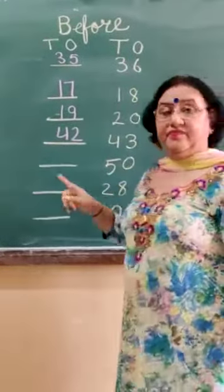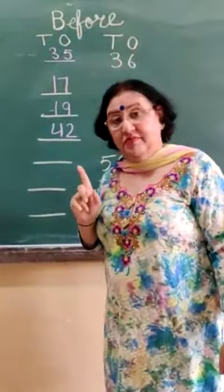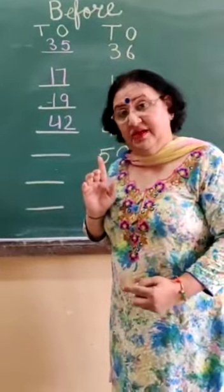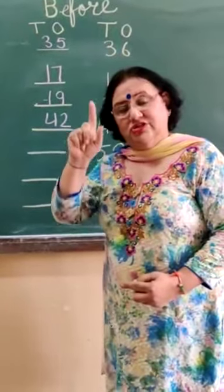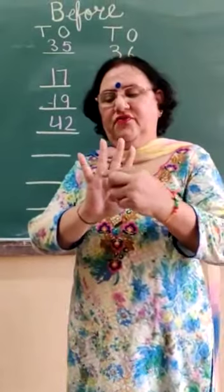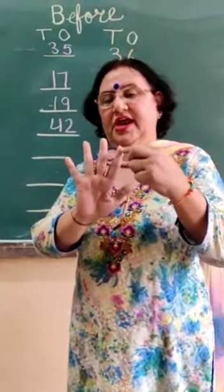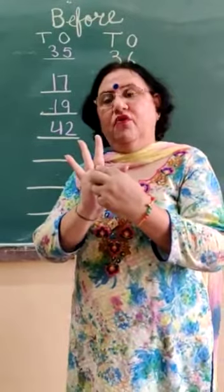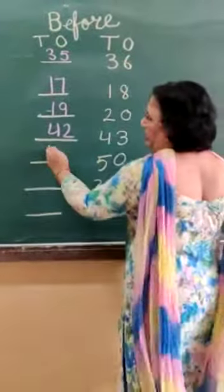This number is 50. 50 comes in. Kis ki line mein aata hai 50? Last mein aata hai. Sab se neechi aata hai. 50 comes in 1's line. So start counting from 41. 41, 42, 43, 44, 45, 46, 47, 48, 49. So write here 49.